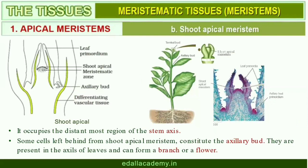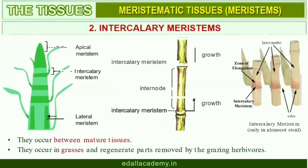During the formation of leaves and elongation of the stem, some cells left behind from the shoot apical meristem constitute the axillary bud. Such buds are present in the axils of leaves and are capable of forming a branch or a flower. The meristem which occurs between mature tissues is known as intercalary meristem. They occur in grasses and regenerate parts removed by grazing herbivores.